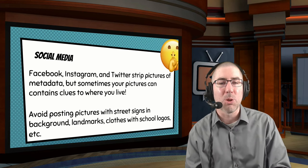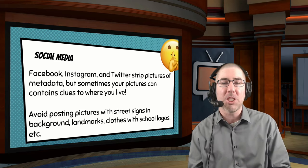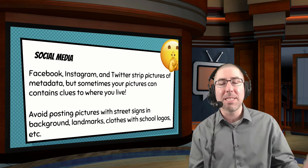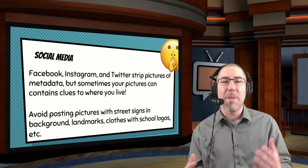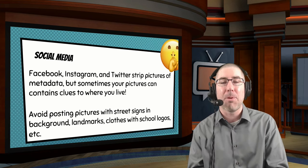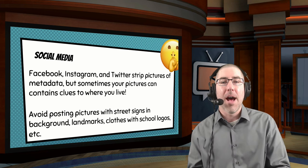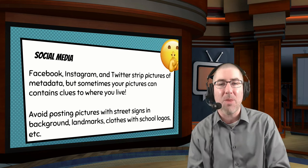Even though social media sites like Facebook, Twitter, and Instagram strip that information out of pictures, students sometimes make mistakes and give away location information anyway — whether it's street signs in the background, school logos, or any kind of information that lets people know where that person is or where they're from. It's something students don't necessarily think about, so it's good to put that thought into their heads.